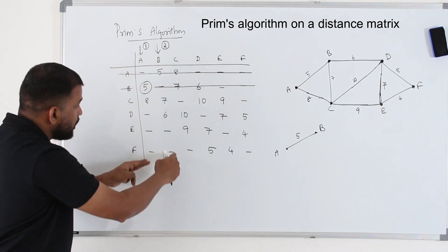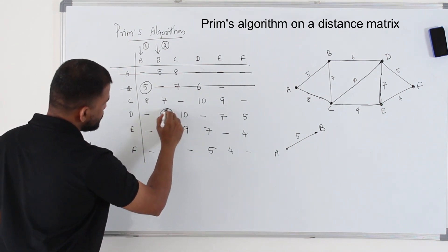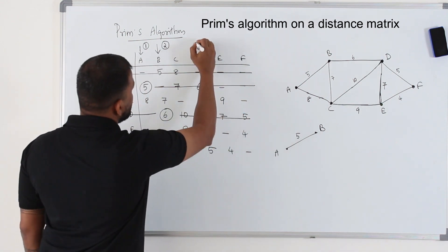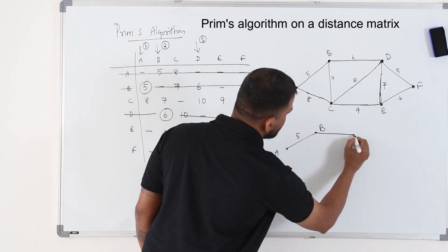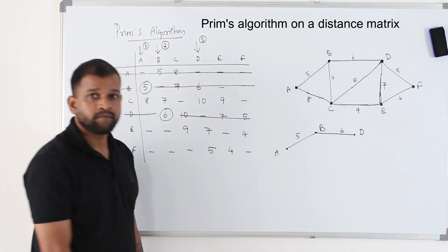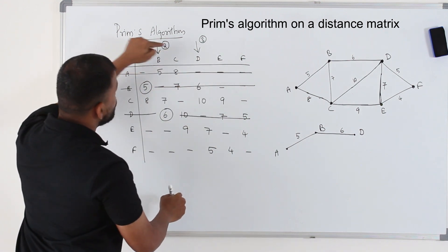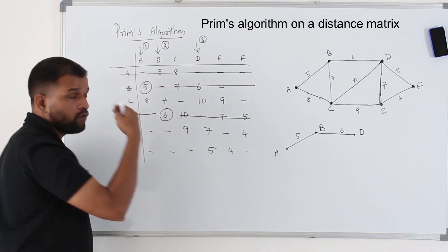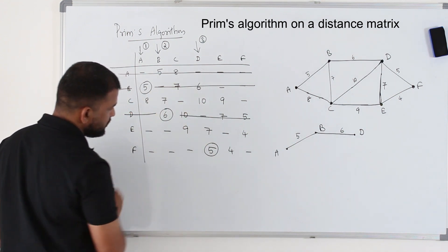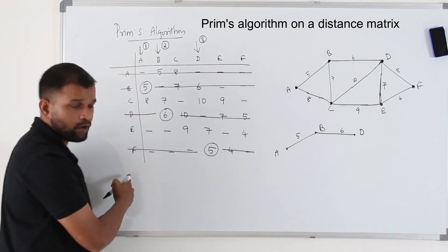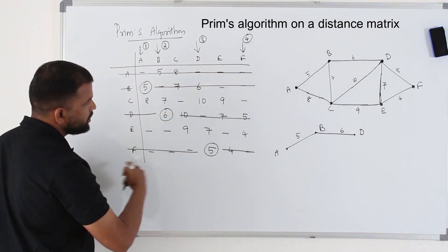Now you have two columns. Look at both columns and find the least number. The smallest number is 6. So delete D and label it as number 3 — from B to D, that's 6. Now look at all three columns labeled 1, 2, 3. Look for the smallest number. Here you have 7 but 5 is the smallest number, so circle it. Cancel F's corresponding row and label F as number 4. So we have added D to F, weight 5.